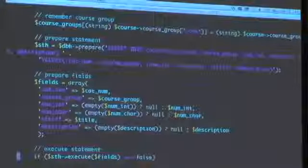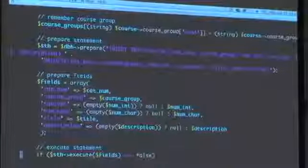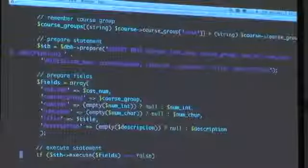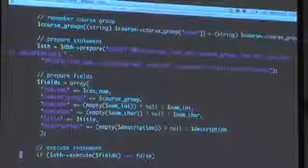What design decision did I apparently make in my database? Recall that numint and numchar are actually optional, right? There's Math A, which doesn't have a number, but there's Computer Science 50, which doesn't have a char.